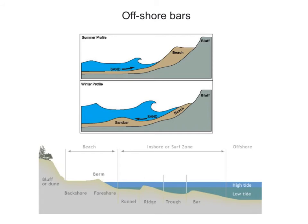Offshore bars are simply deposits of sand off the shore, and we can see this specifically between summer and winter profiles. In the summer profile we can see a well-formed beach, but by winter, with more destructive storms and waves, the beach material has been eroded and deposited offshore. Offshore bars are generally not visible at low tide because they are too far below low tide, as we can see on the diagram, where the bar — a deposition of sand or pebbles — sits below the low tide mark.